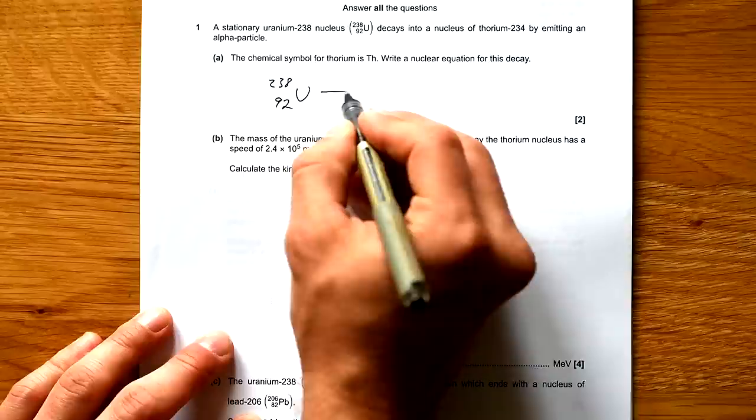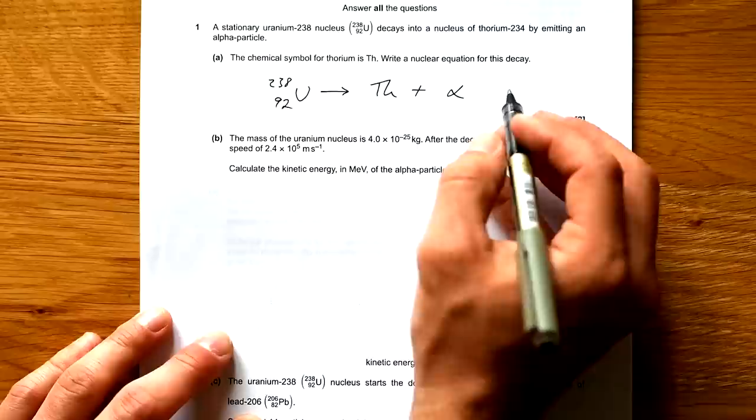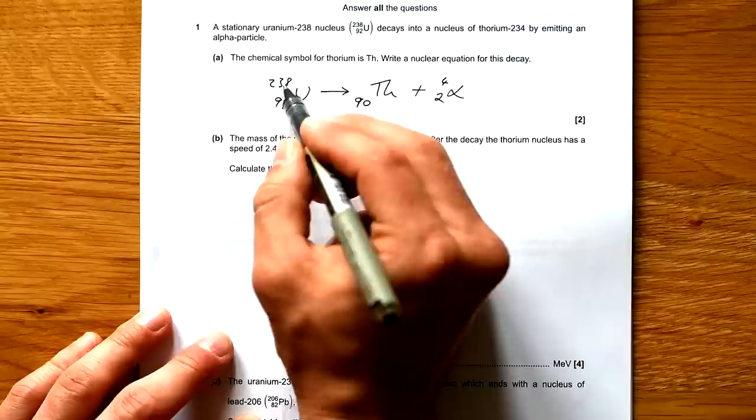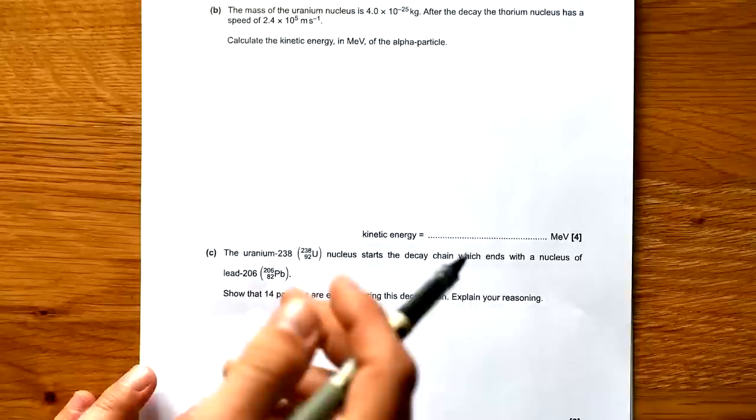So we start off with uranium-238 and that's 92. And that decays to thorium and an alpha particle. We know an alpha particle is always four and two. There's two protons and two neutrons, so four mass altogether. And then it's just a case of maths. Thorium is atomic number 90. It has to be. 92 is 90 and 2. 238 take away 4 is 234. Couldn't be easier.